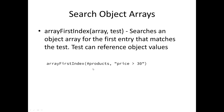We have this object that presumably represents a form field, and it has a value called price. Products is an array, so products at index one dot price would be the value you're testing. Array first index looks through the array and performs this test on each entry. If the value of the price field property is greater than 30, it's going to give you back the index of the first one that passes. If it doesn't find it, it returns negative one, just like the other array search.